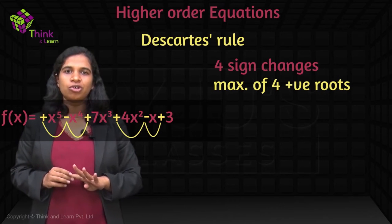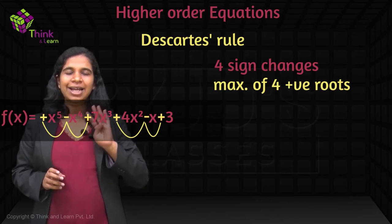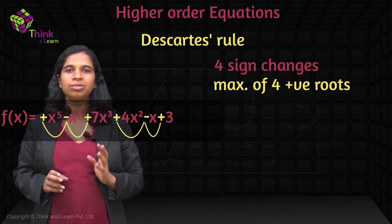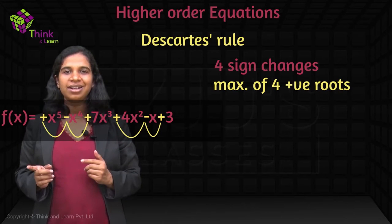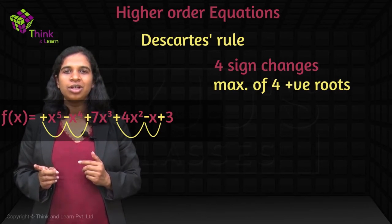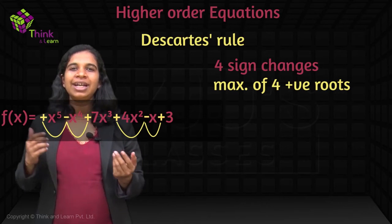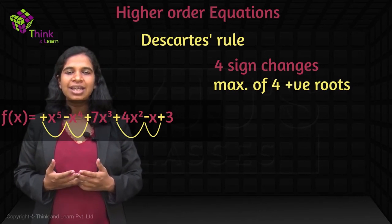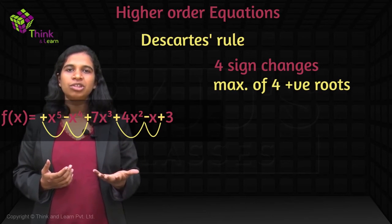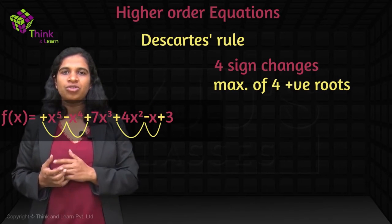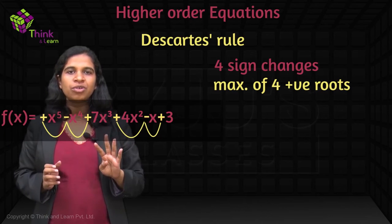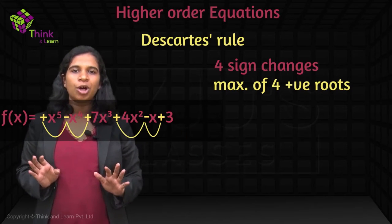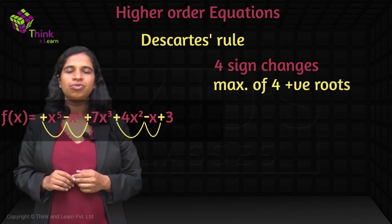Now it could have fewer than 4 — this is just the maximum. It could have either four, two, or zero positive roots. Why reduce in counts of two? Because if a root is not real, it has to be complex, and complex roots occur in pairs. So it can have a maximum of four positive roots, or two, or zero — but three or one is not possible. Always reduce in counts of two.